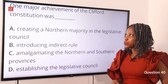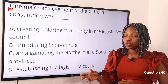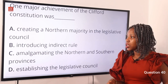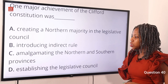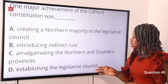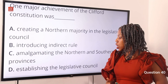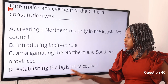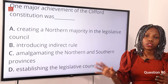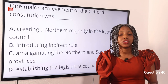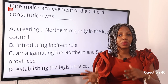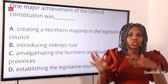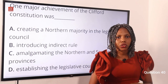Question 40. One major achievement of the Clifford constitution was dash. Option A, creating a northern majority in the legislative council. Option B, introducing indirect rule. Option C, amalgamating the northern and southern provinces. Option D, establishing the legislative council. The answer is Option D — establishing the legislative council. One of the merits associated with the Clifford constitution was the establishment of the new legislative council for the southern protectorate of Nigeria.